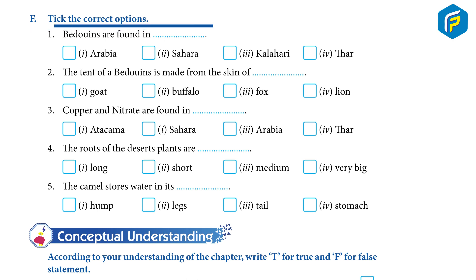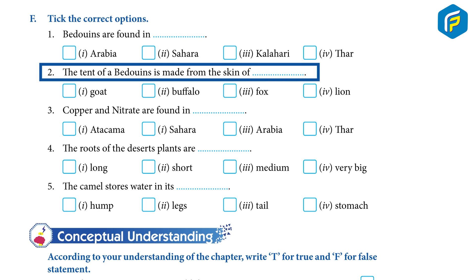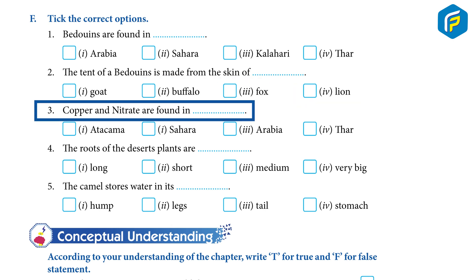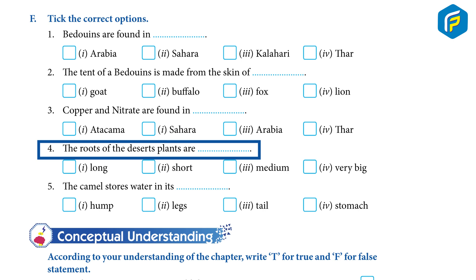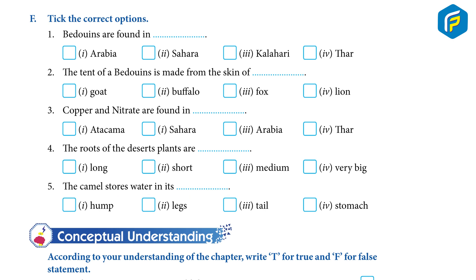F. Take the correct option: 1. Bedouins are found in dash: Arabia, Sahara, Kalahari, Thar. 2. The tent of Bedouins is made from the skin of dash: Goat, Fox, Lion. 3. Copper and Nitrate are found in dash: Atacama. 4. The roots of desert plants are dash: Long, Short, Medium, Very Big. 5. The camel stores water in its dash: Hump, Legs, Tail, Stomach.